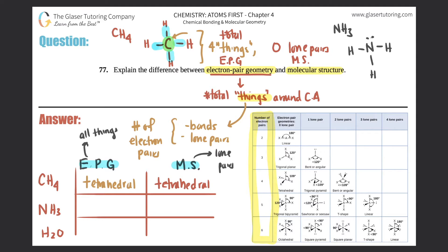So for my electron pair geometry, how many things are around this central atom? Well, it's three single bonds and one lone pair, so that's still four total things or four electron pairs. So I'm just where I was with methane, and I always take the first one. So that's tetrahedral. So they have exactly the same electron pair geometry.